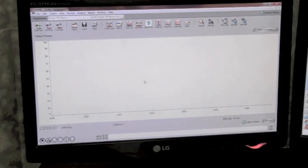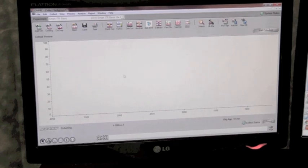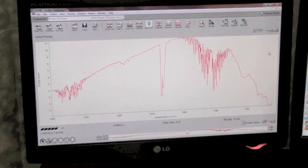The first thing that we're going to do when we do an analysis is gather a background spectra so that that can be subtracted from the spectra that we get, so that all we're seeing is the actual sample that's gathered.